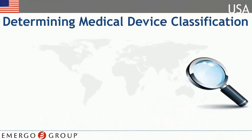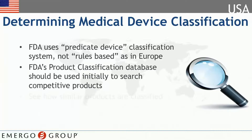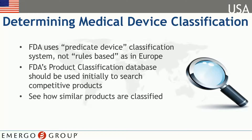The FDA uses a system that compares all device applications to devices already cleared for sale in the U.S. Therefore, it's very important for you to identify similar devices already cleared by the FDA using the Product Classification Database. This is a central repository of all registered medical devices. Using this database, you can compare and contrast your product to determine its classification.